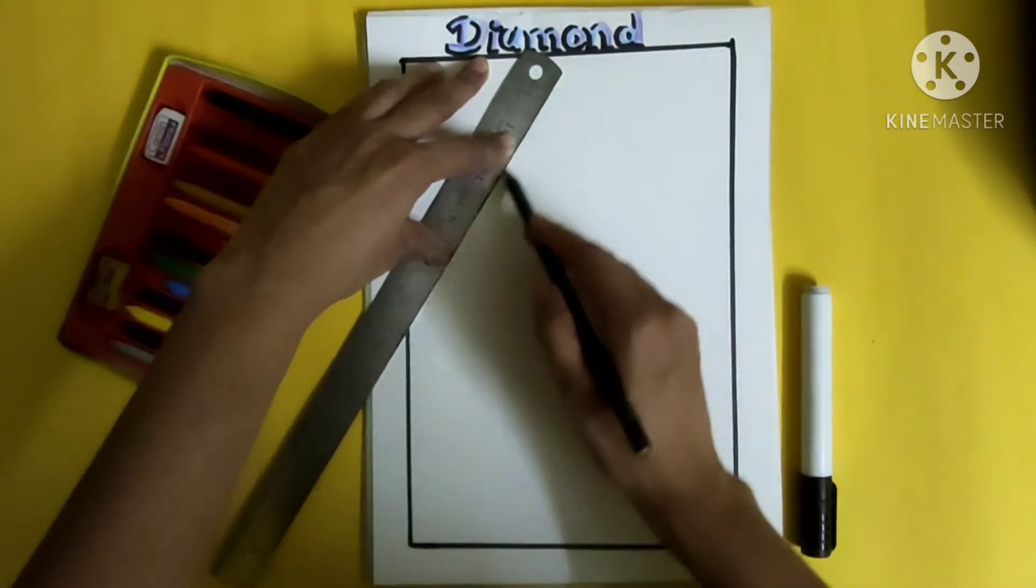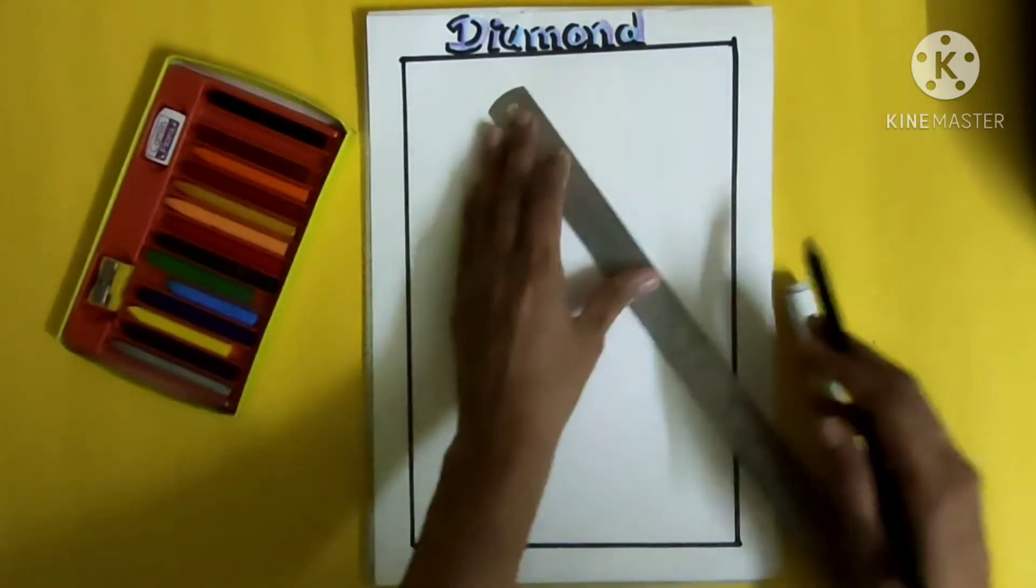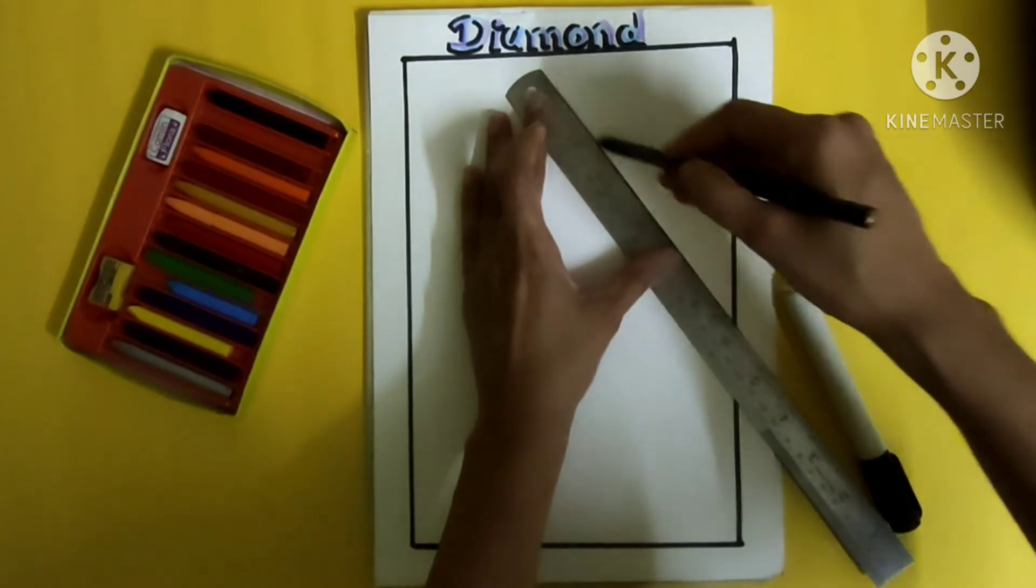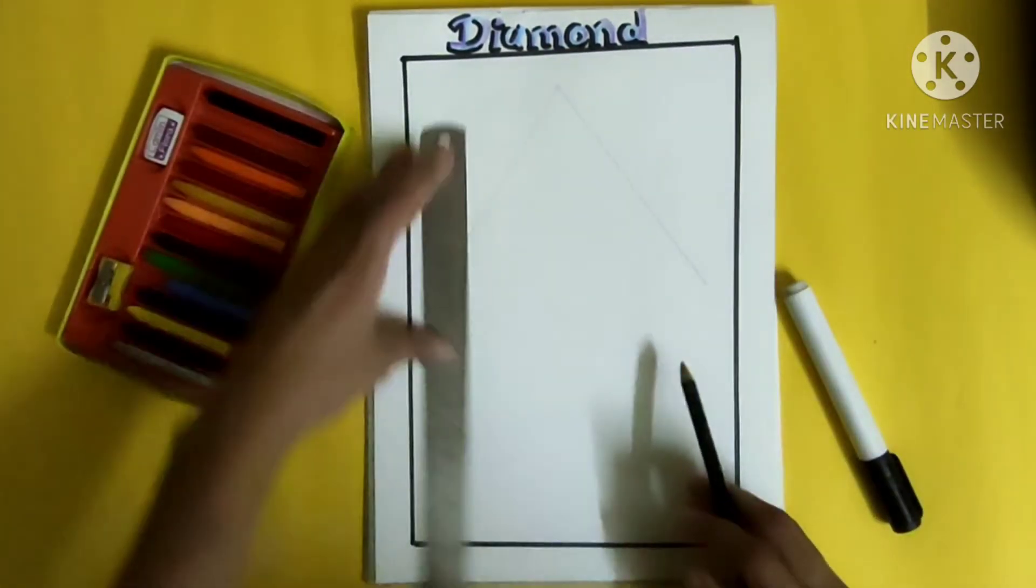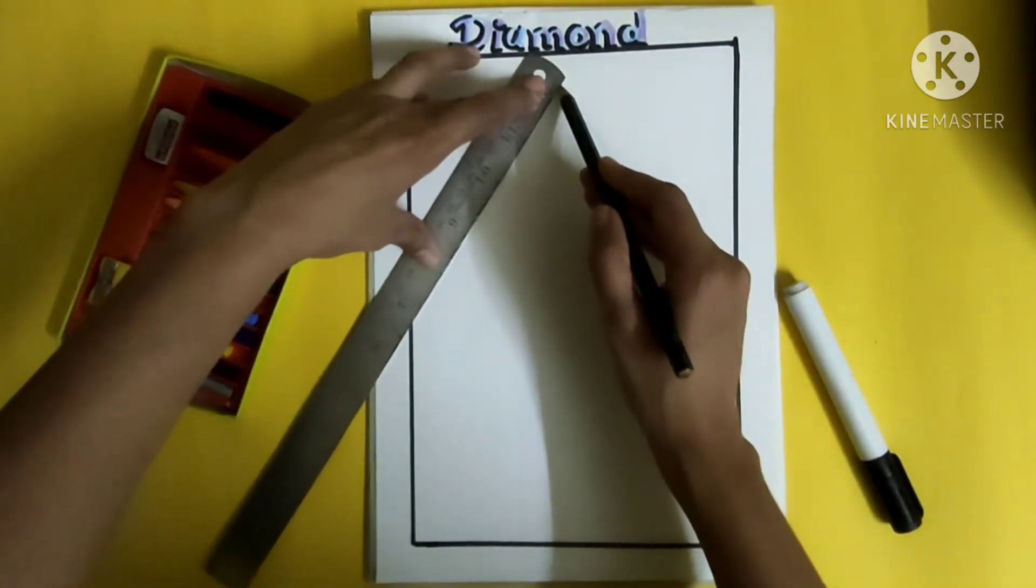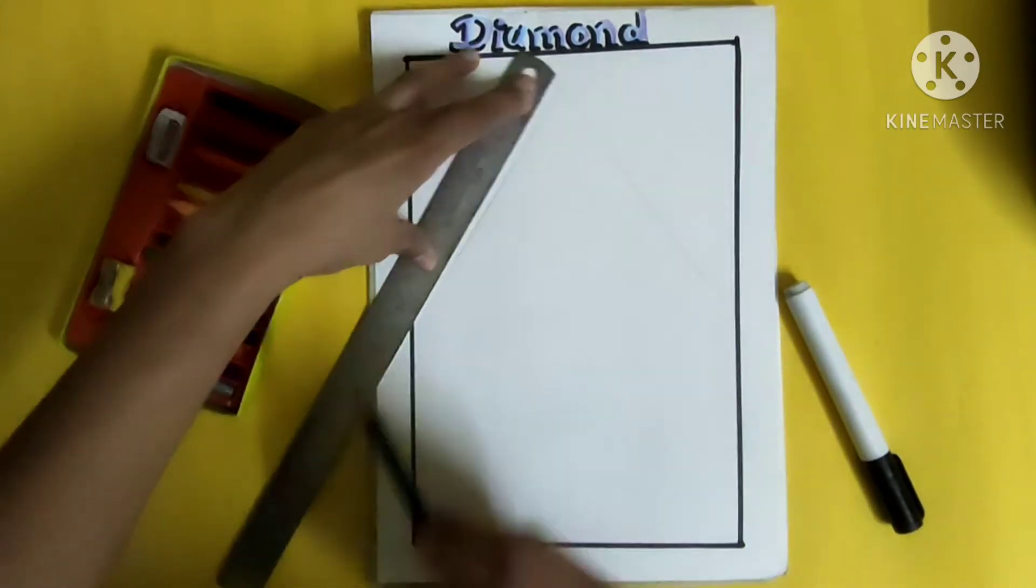In our last video we learned how to draw a triangle, so like that we will draw a diamond also.